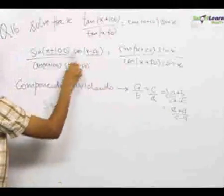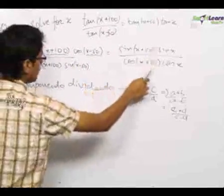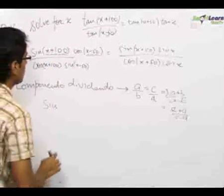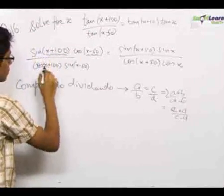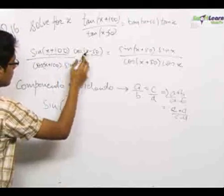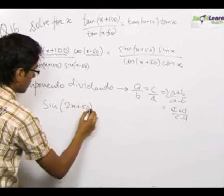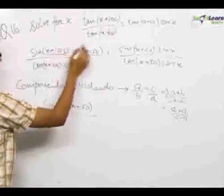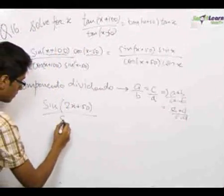So this is a upon b equals c upon d. On addition, a plus b gives sine(a)cos(b) plus cos(a)sin(b), which equals sin(a+b). So a plus b is sin(2x+50).